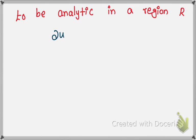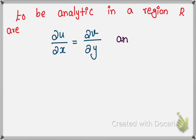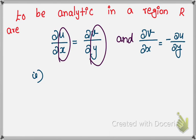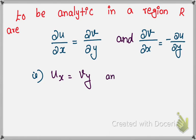The necessary condition requires: ∂u/∂x = ∂v/∂y, and ∂v/∂x = −∂u/∂y. In shorthand notation, this is written as u_x = v_y and v_x = −u_y.